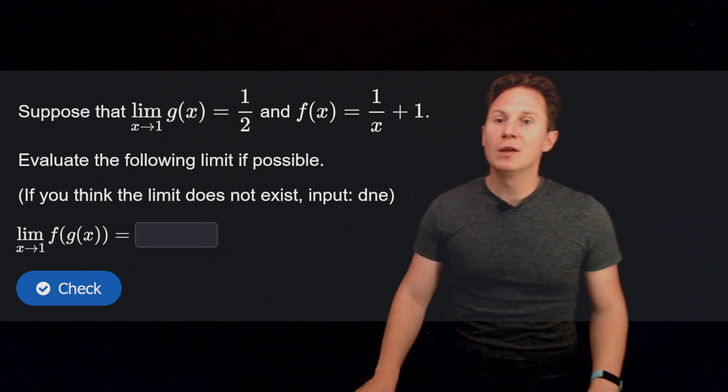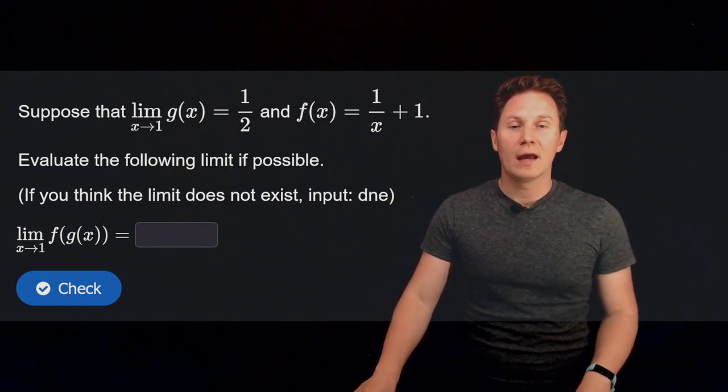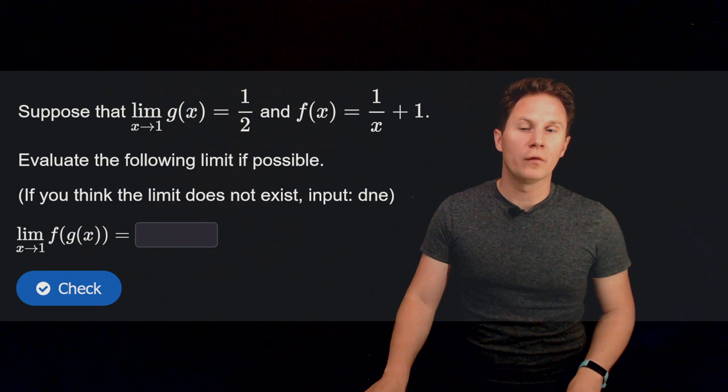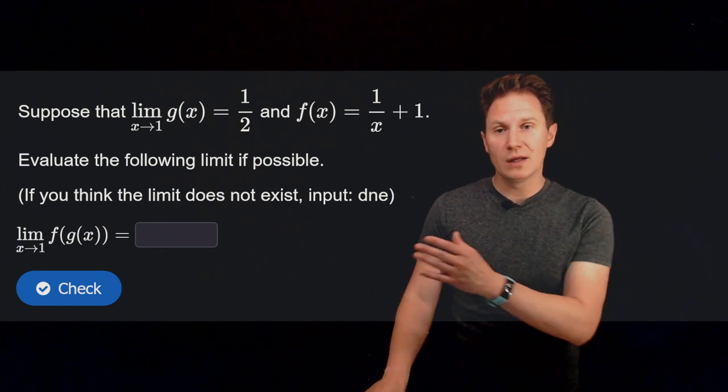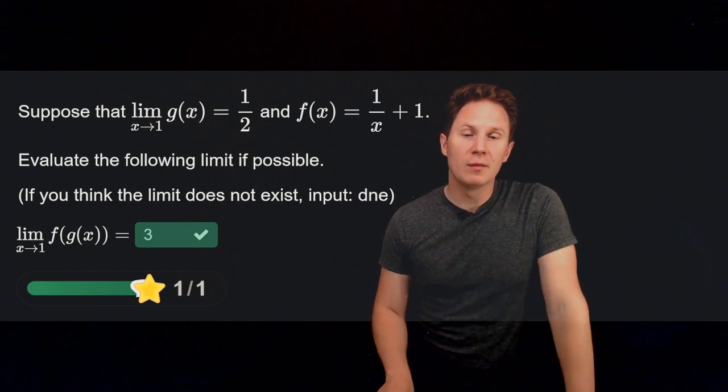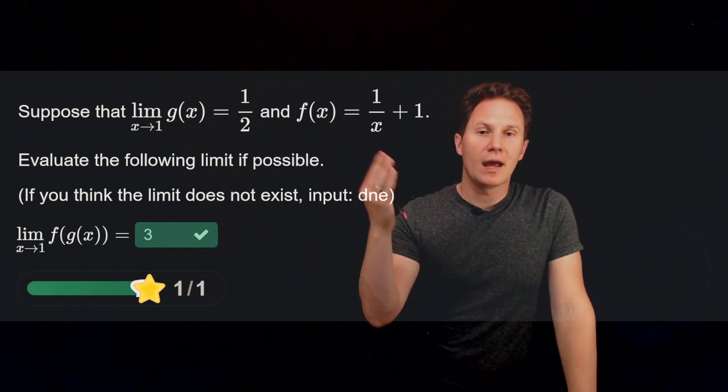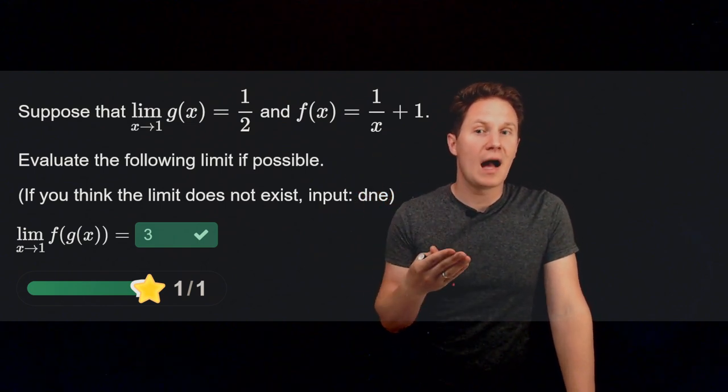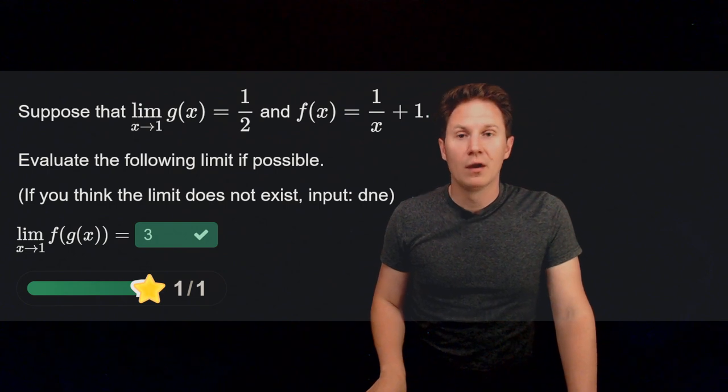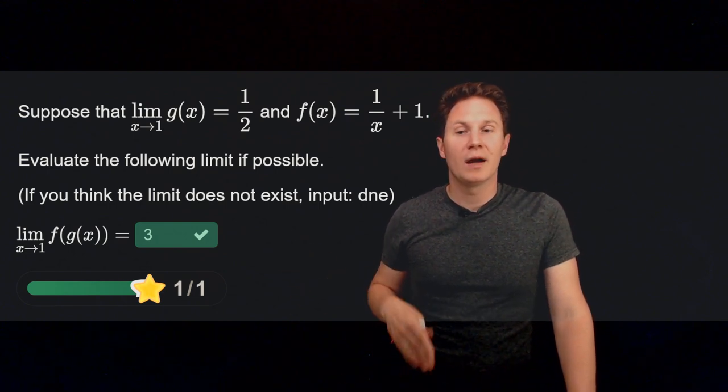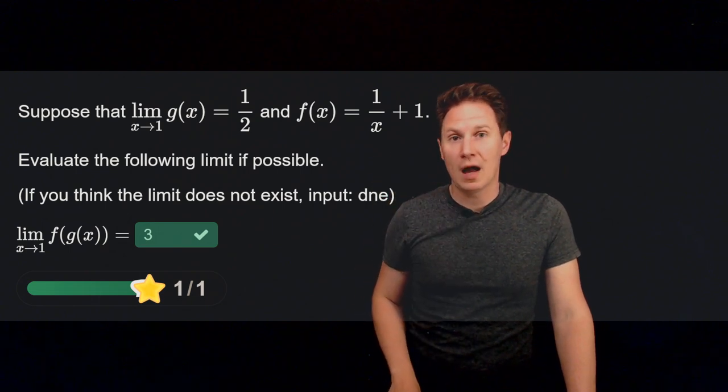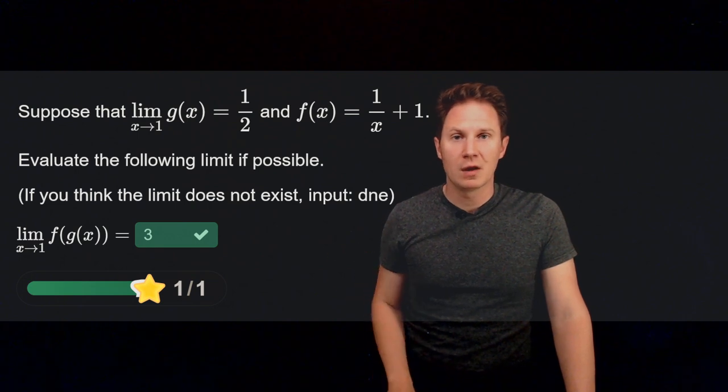Next, suppose that we know that the limit as x approaches 1 of g of x is a half, and f of x is defined as 1 over x plus 1. What's the limit as x approaches 1 of f of g of x? Pause the video and input your answer in the box. Okay, I hope you paused it and realized that you can evaluate this limit by looking at this function f of x that is continuous at x equals a half, and that is exactly the limit of g of x as x approaches 1. So we can evaluate the limit by simply evaluating f at x equals a half to get the reciprocal of half plus 1, so that's 2 plus 1 equals 3.